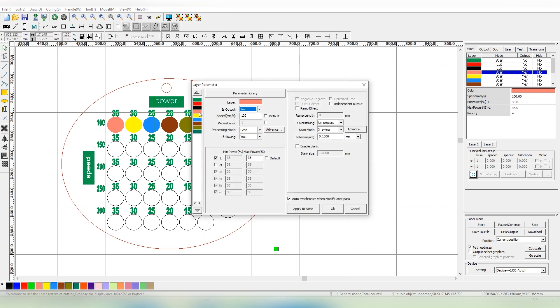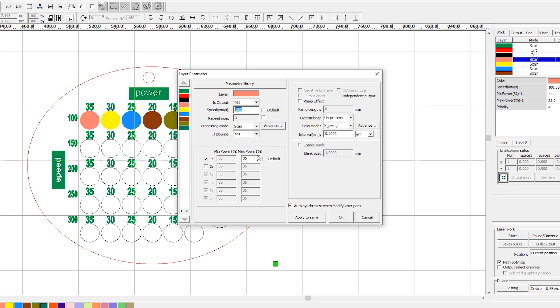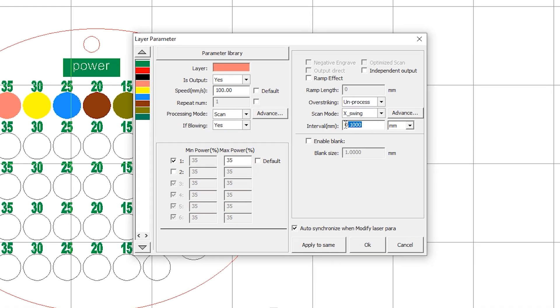And change power according to the written parameters: 35, 30, 25, 20, 15, 10.